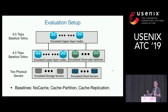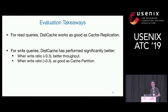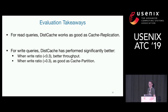For evaluation, the setup uses two 6.5 terabit-per-second Belfort Tofino switches as the upper-layer and lower-layer cache nodes and the client-side switch, plus two physical servers to emulate storage and client servers. Baseline comparisons include no cache, cache partition, and cache replication. The key takeaway is that for read queries, DistCache works as well as replication. For write queries, DistCache performs significantly better — when the write ratio is reasonable, say less than 30%, it provides better throughput than all baselines. Note that in practice the write ratio is typically around 3–5%.